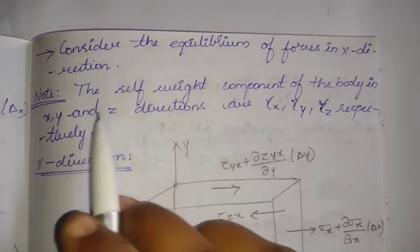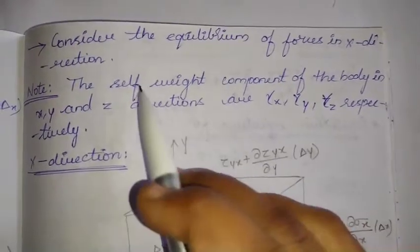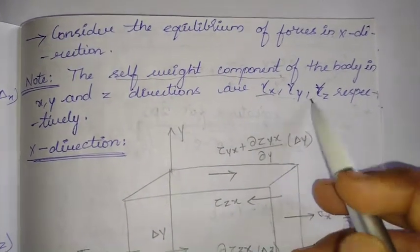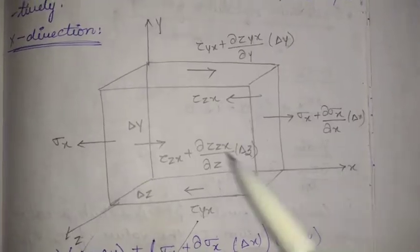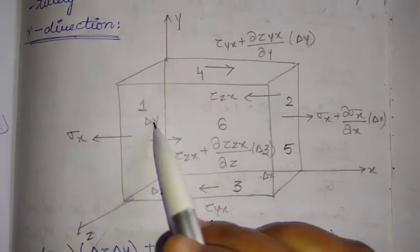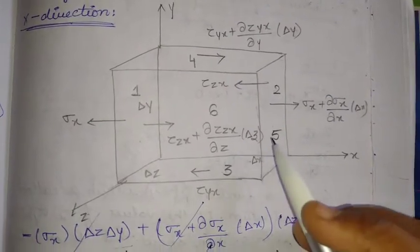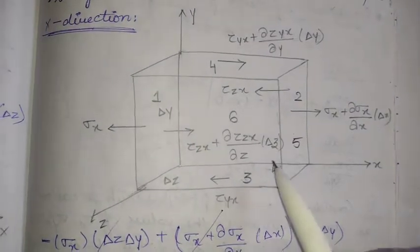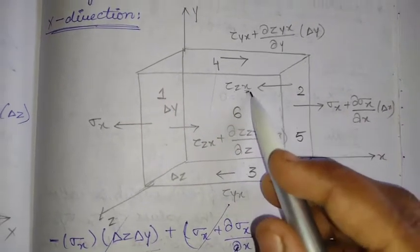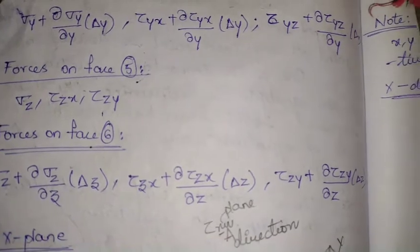First we consider the x-direction. Remember the self-weight components of the body in x, y, and z directions are gamma x, gamma y, and gamma z respectively — these are also forces acting on the element. Considering forces in the x-direction on all six faces, we need to identify all stress components whose second subscript is x — for example, tau zx on face 5 acts in the x-direction.